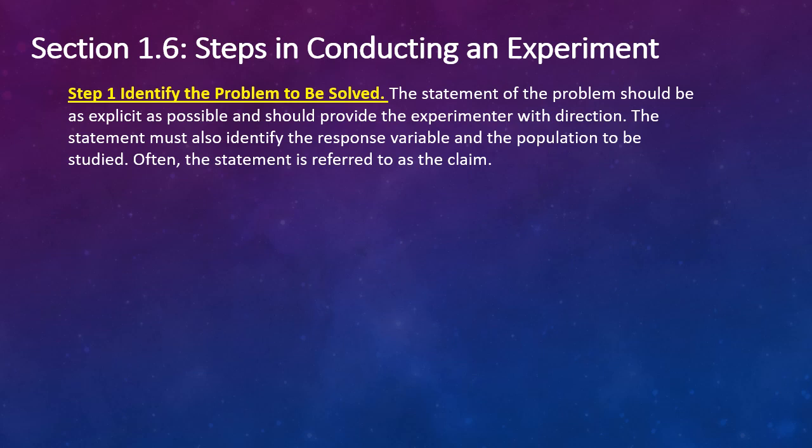While this is not technically part of section 1.5, I wanted to cover at a high level the steps in conducting an experiment because I think it's important. We're not actually including 1.6 in this course, but if you want to review some of this, it's not a very long section and it's pretty straightforward. When you're conducting an experiment, the first step is to identify the problem to be solved or the question to be answered. The statement of the problem should be as explicit as possible and should provide the experimenter with direction. The statement must also identify the response variable and the population to be studied. Often the statement is referred to as the claim.